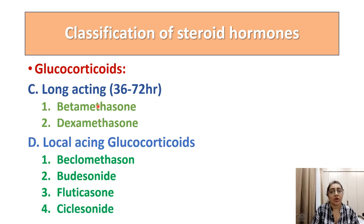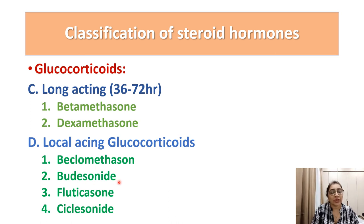Longer-acting corticosteroids act for 36 to 72 hours — betamethasone and dexamethasone. Locally acting corticosteroids include beclomethasone, budesonide, fluticasone, and ciclesonide. These are the locally applied corticosteroids.